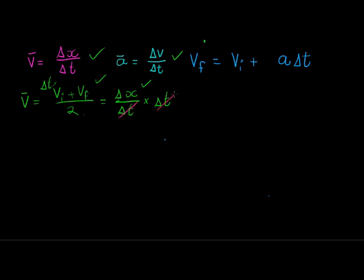On this side, time cancels and I'm just left with the change in displacement equal to the average velocity, which is my initial velocity plus my final velocity, divided by 2,